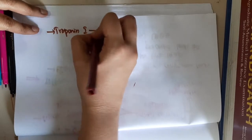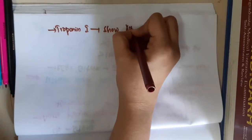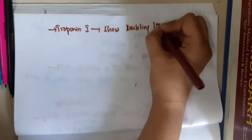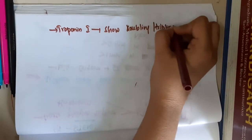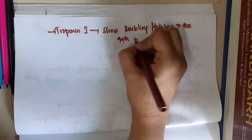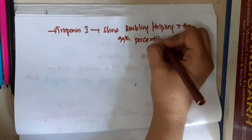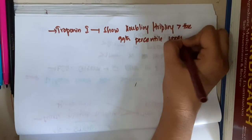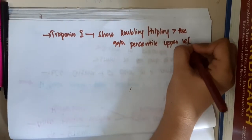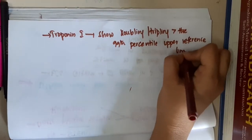The next criteria is troponin I. Troponin I will show either doubling or tripling above the 99th percentile of the upper reference limit.